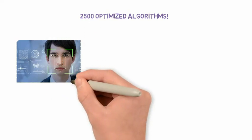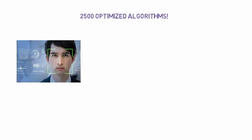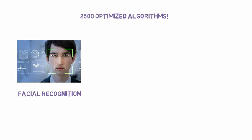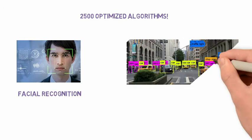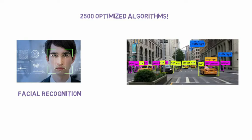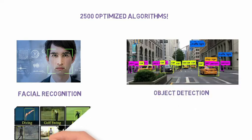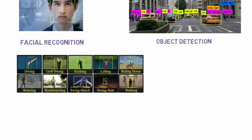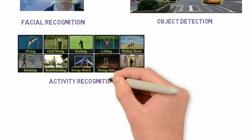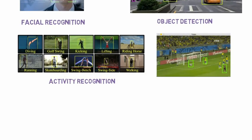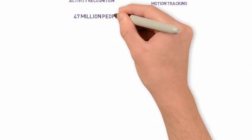These algorithms can be used to detect faces in images and videos, for example in an automated attendance system in classrooms. They can also be used to detect objects in images and videos, like in self-driving cars, for activity recognition, and in motion tracking. There are many more examples.